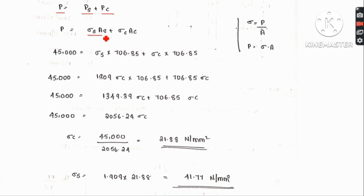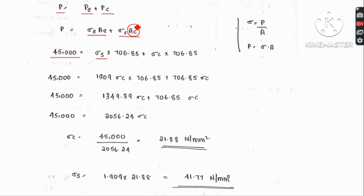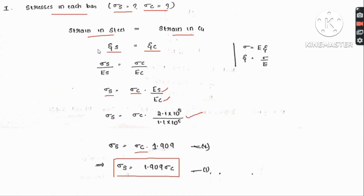Since stress sigma equals load divided by area, load equals sigma times area. So P_s equals sigma_s times A_s and P_c equals sigma_c times A_c. With P equal to 45,000 N, and substituting the areas, sigma_s is equal to 1.909 times sigma_c.